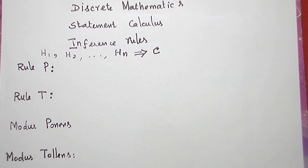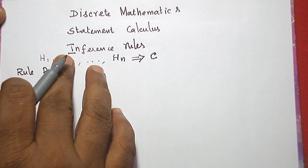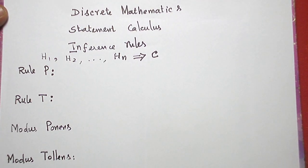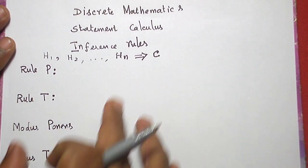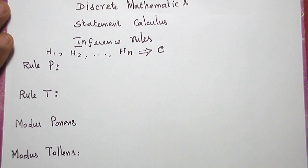For supporting our argument, we have to make arguments and based on that we have to conclude. For supporting our argument, we need some inference rules, some implications, standard implications. Let me list out those standard implications.